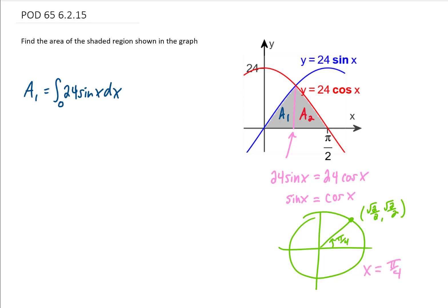Now back to the original problem. To find A1 we need to integrate 24 sine of x from x equals 0 to pi over 4. Okay, I suppose we can complete that integral first before finding A2. The integral of sine is negative cosine and this is a definite integral so we're going to plug in our upper limit of integration.